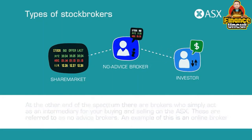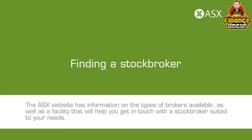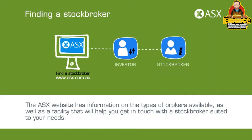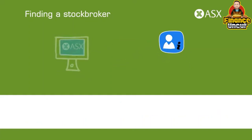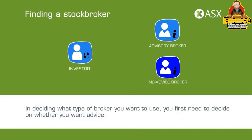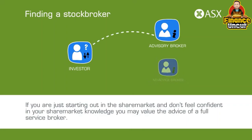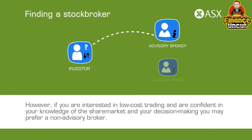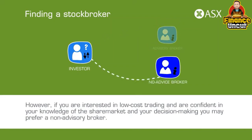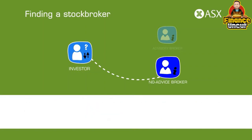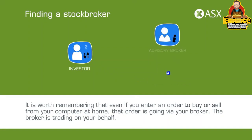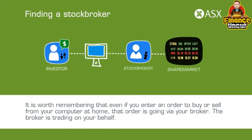An example of a no-advice broker is an online broker. The ASX website has information on the types of brokers available, as well as a facility to help you get in touch with a stockbroker suited to your needs. In deciding what type of broker to use, you first need to decide whether you want advice. If you're just starting out and don't feel confident in your share market knowledge, you may value the advice of a full-service broker. If you prefer low-cost trading and are confident in your knowledge, you may prefer a non-advisory broker. Even if you enter an order from your computer at home, that order is going via your broker — the broker is trading on your behalf.